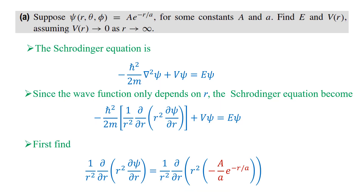Now we will see the first part. The Schrödinger equation in spherical polar coordinates is: minus h-cross squared over 2m, times the Laplacian squared psi, plus V·psi equals E·psi, where the Laplacian is the Laplacian operator. Here the wave function depends only on r, so the Schrödinger equation reduces to just the radial part of the Laplacian, because it does not depend on theta or phi.